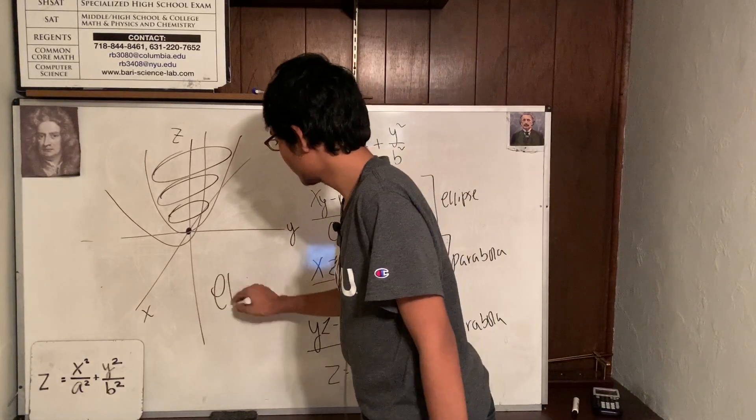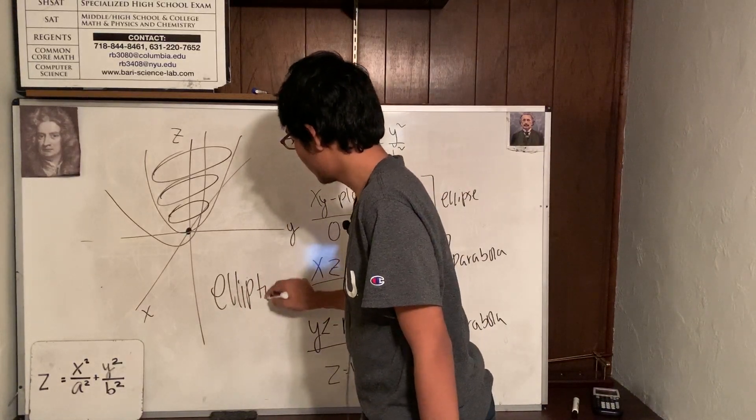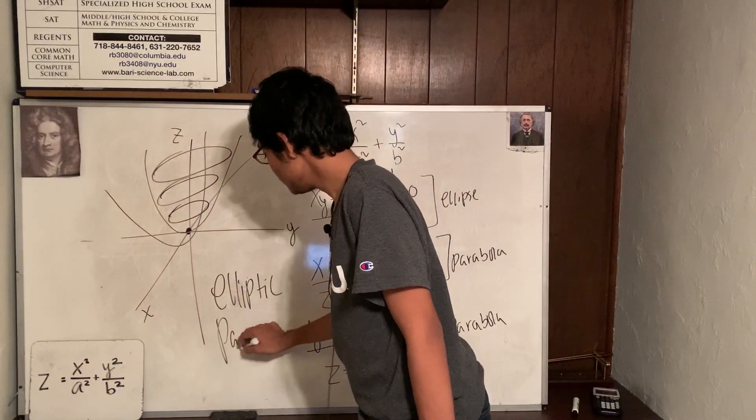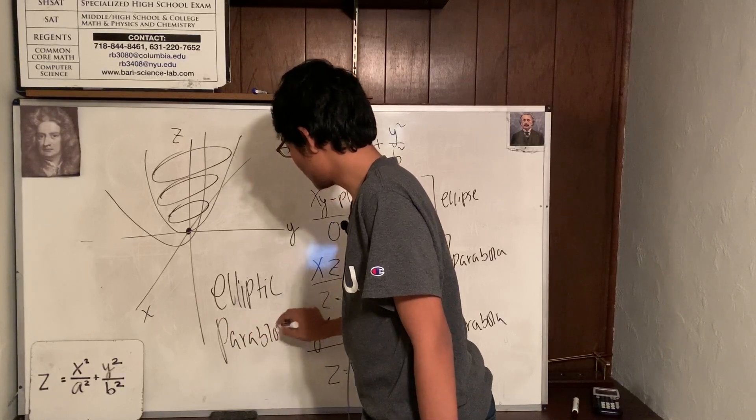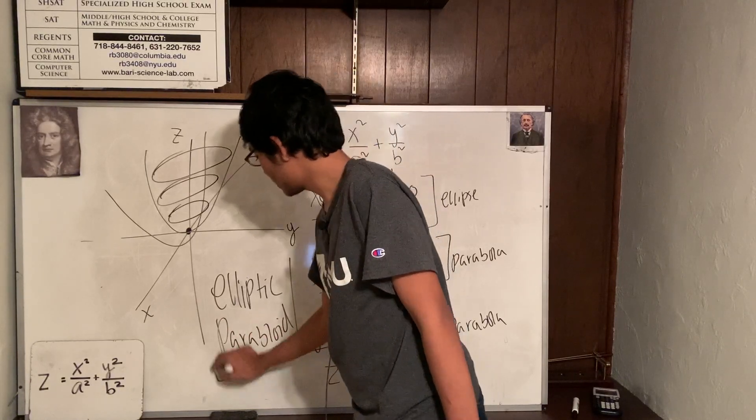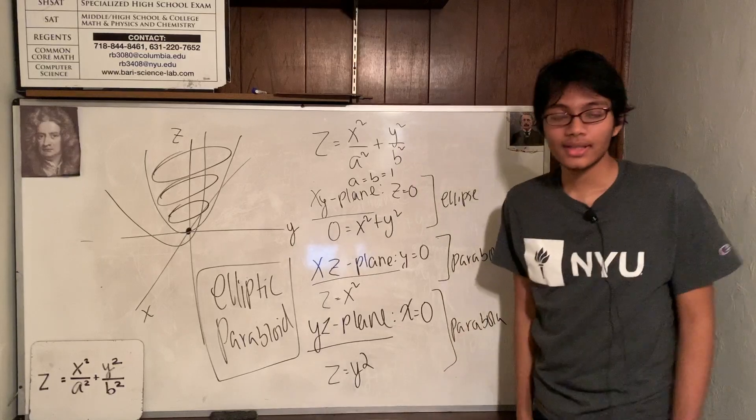So what we're left with is simply an elliptic paraboloid. That's all there is to it. An elliptic paraboloid. Isn't that neat?